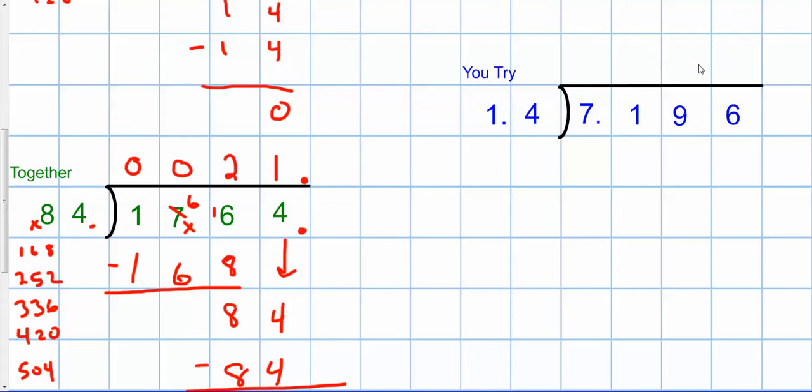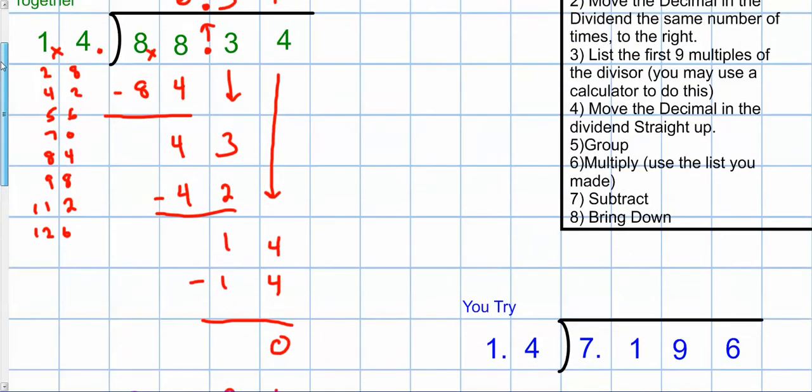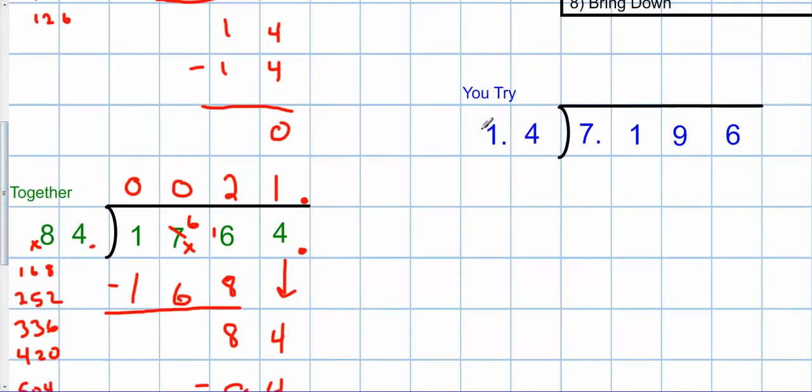Alright, sorry about that. So we have a new problem here. So we have 7 and 196 thousandths divided by 1 and 4 tenths. Now, I've done you a nice favor by listing all of your multiples of 14.